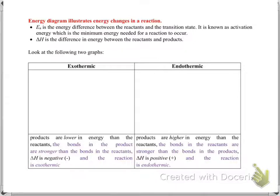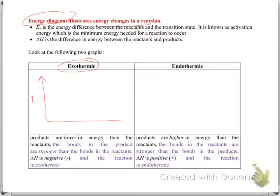The energy changes in a reaction can be illustrated by an energy diagram. For an exothermic reaction, the vertical axis represents energy and the horizontal axis represents the reaction coordinate. The reactants are placed on the left side of the diagram at their energy level.